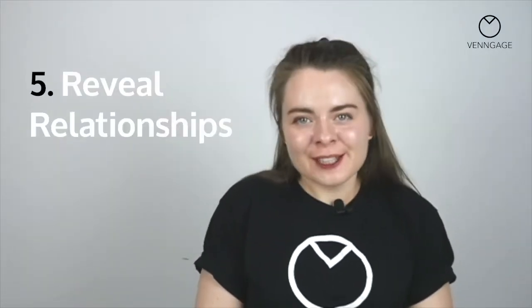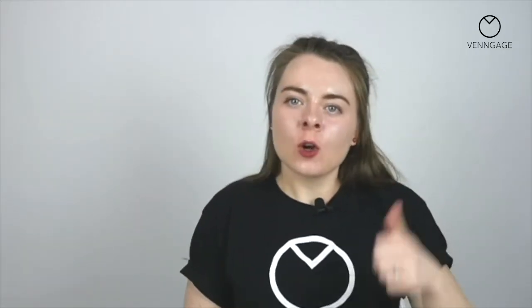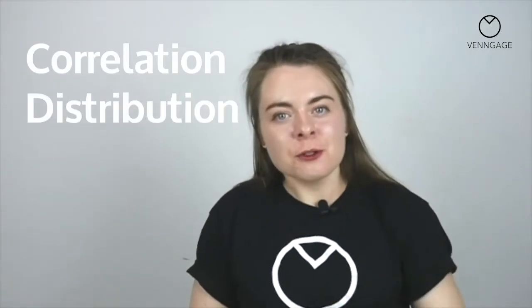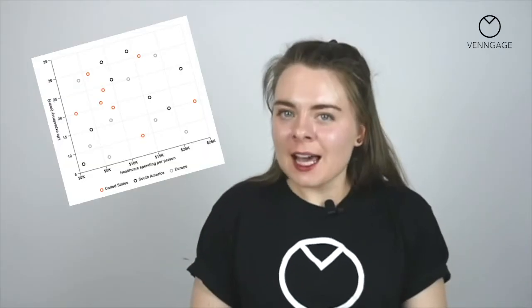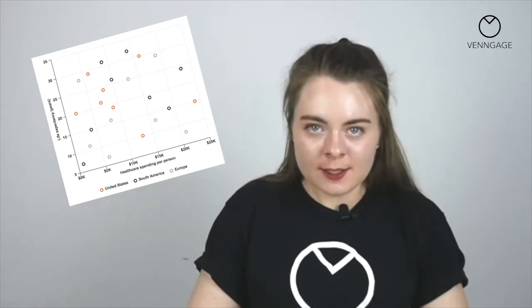The second last goal in I-CORE is reveal relationships. There are two key types of relationships that you will probably want to visualize with a chart, and that is correlation and distribution. Let's say you want to show the relationship between two variables like age and height, or month and weather. A scatter plot is the most reliable type of chart to do this. Scatter plots are handy because they allow you to show the raw data, which helps prevent your data from being skewed by your chart.